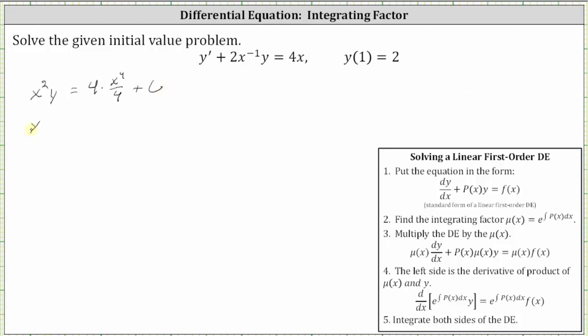Simplifying, we have x squared y equals x to the fourth plus c. Next, we solve for y by dividing both sides by x squared, which gives us y equals x squared plus c divided by x squared. This is our general solution.